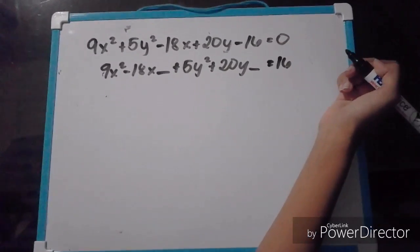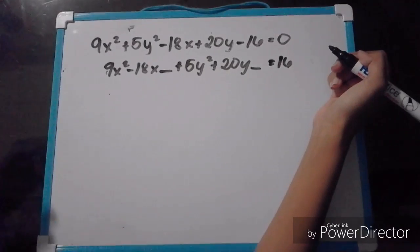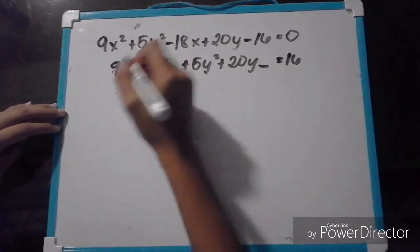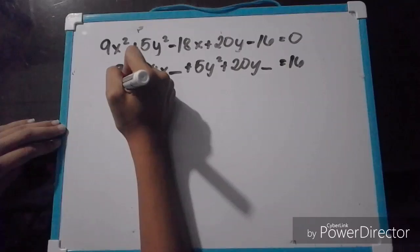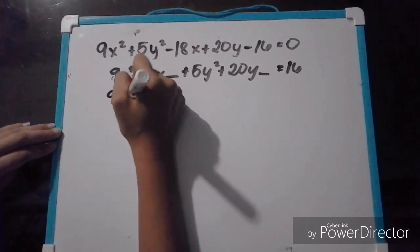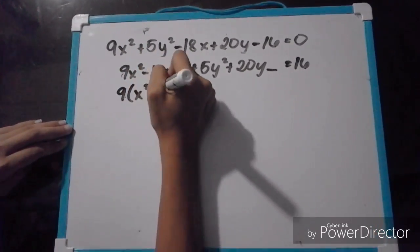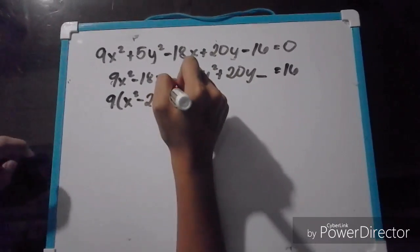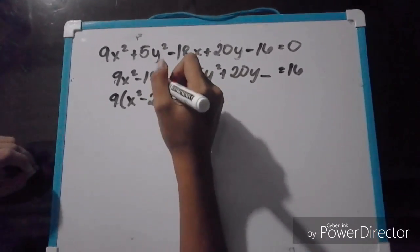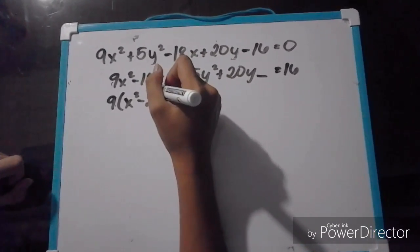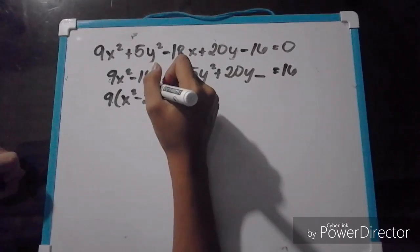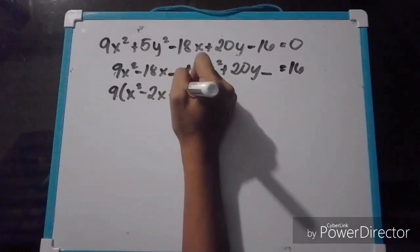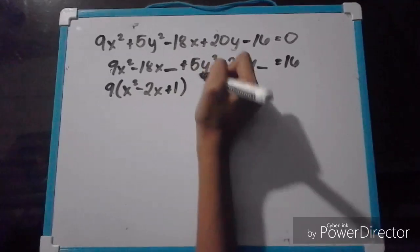Now we will complete the square. To do that, first we factor out if necessary — in this case, we will factor out 9 and 5. So it will be 9 times the quantity of x squared minus 2x. Then, in completing the square, we divide the coefficient of the second term by 2, then square the quotient, so it will be 1.